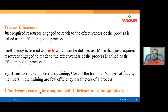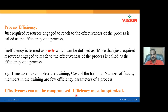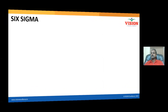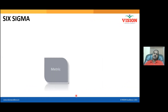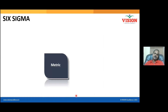Effectiveness cannot be compromised. At the same time, efficiency must be optimized. This is, in essence, process improvement. So what is basically Six Sigma? Basically, Six Sigma is...